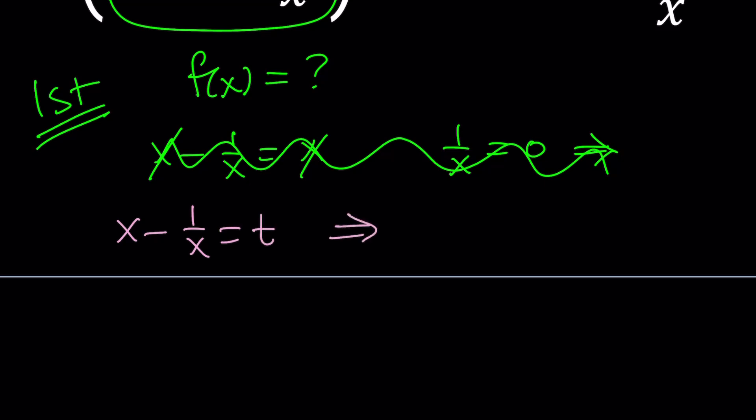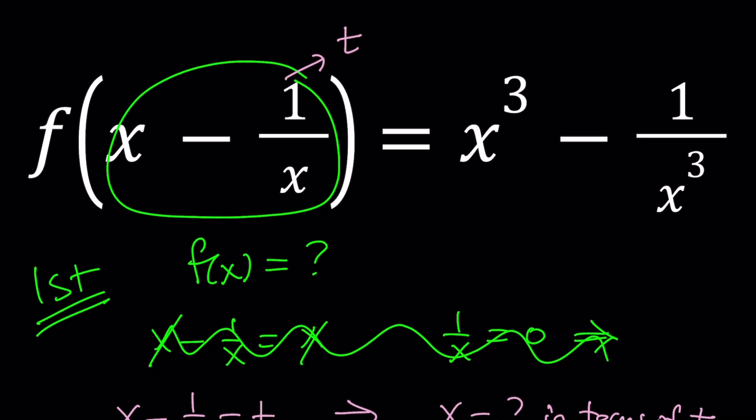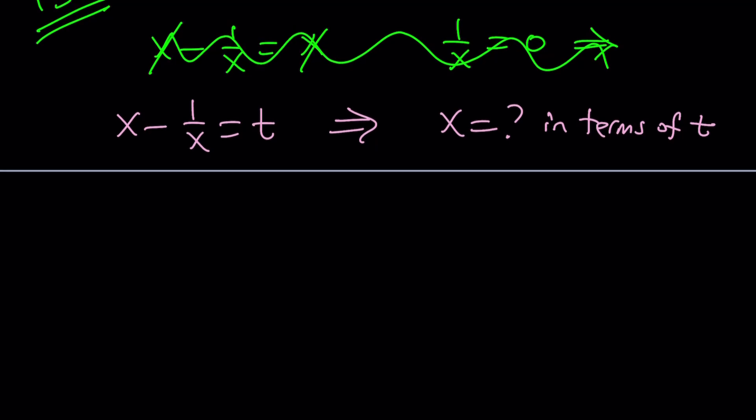And then from here, we're going to solve for x in terms of t. And then that expression, we will plug in on the right-hand side. Make sense? So, that's going to give us something in terms of t. So, let's find out what x is from here. So, let's multiply everything by x. x squared minus 1 equals tx.